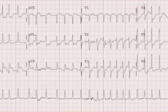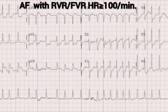You can see this ECG — this is AF with irregular rhythm and the heart rate is greater than 100 per minute, so it is AF with RVR (rapid ventricular rate) or FVR (fast ventricular rate).